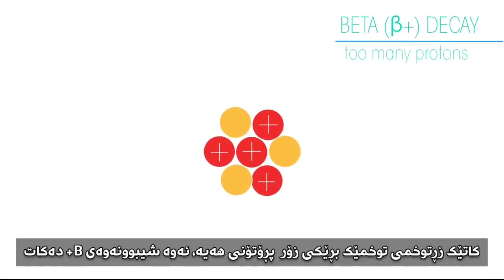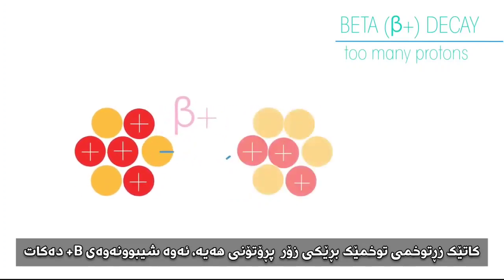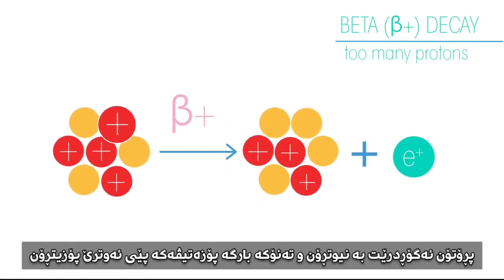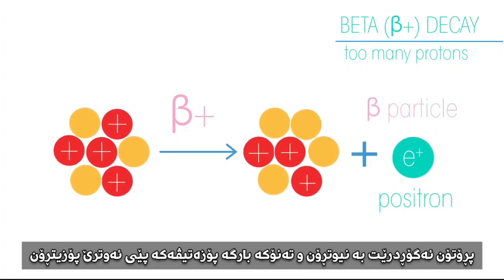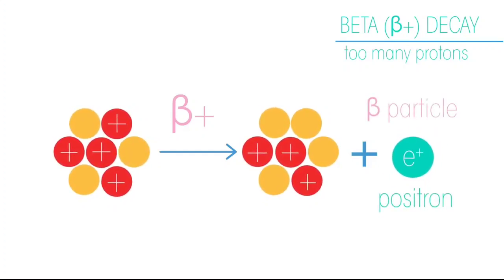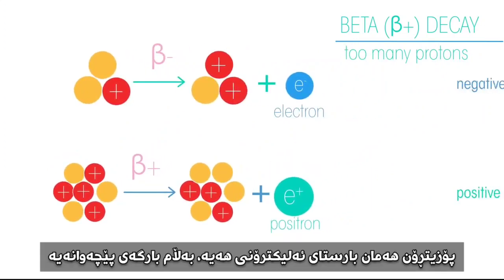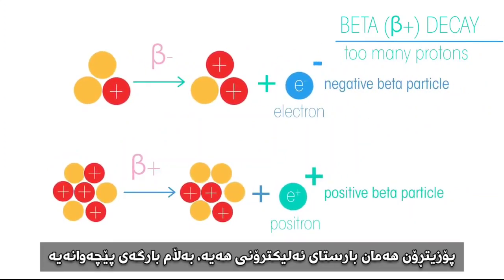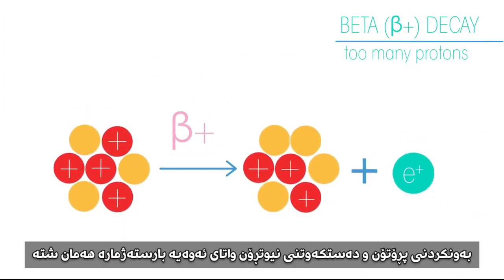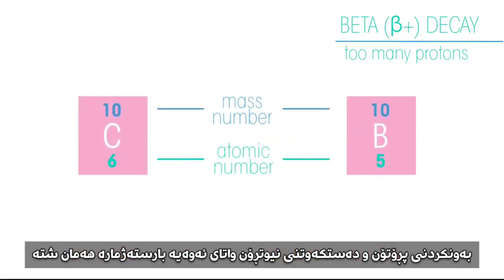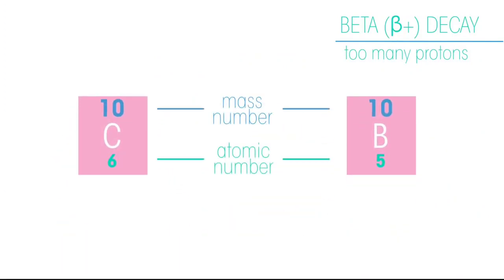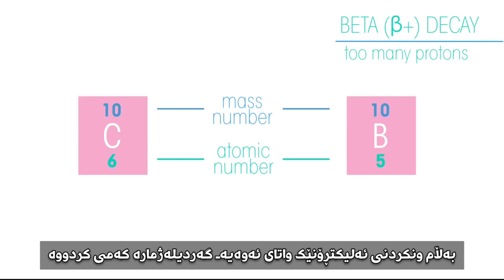When an isotope has too many protons it decays by beta plus decay. A proton is converted into a neutron and a positive beta particle called a positron. Positrons have the same mass as electrons but the opposite charge. By losing a proton but gaining a neutron, the mass number stays the same, but the loss of a proton means the atomic number decreases by one.